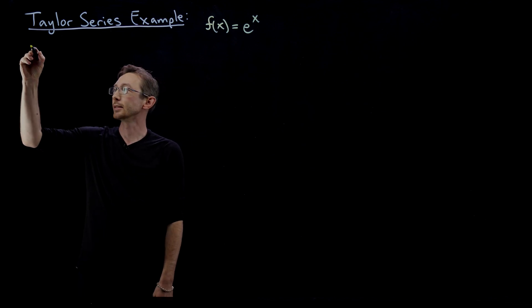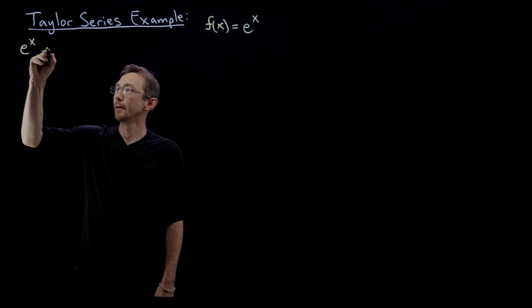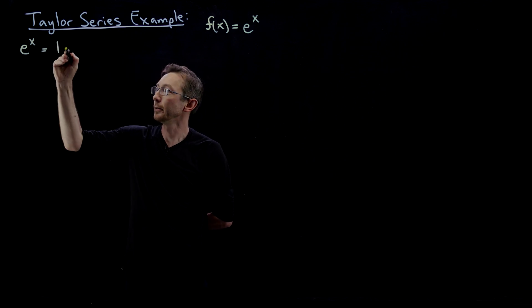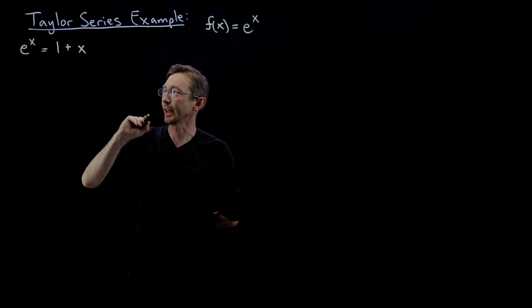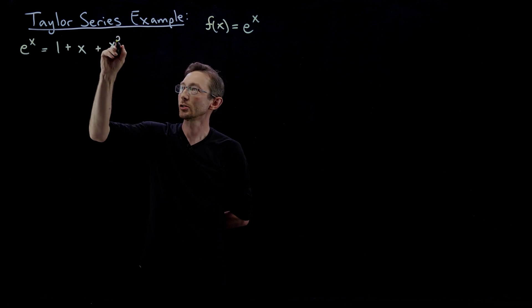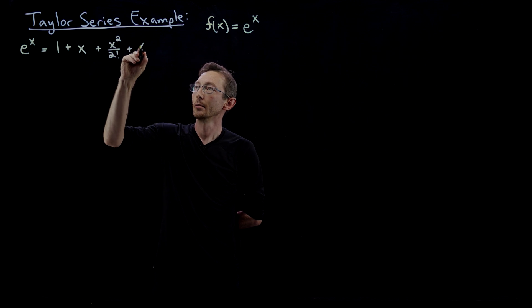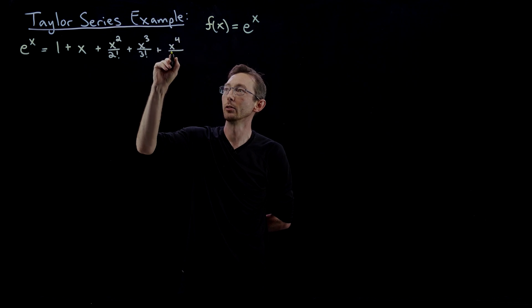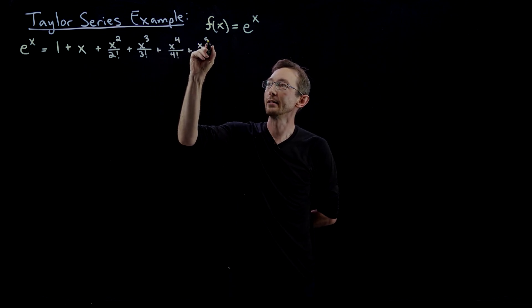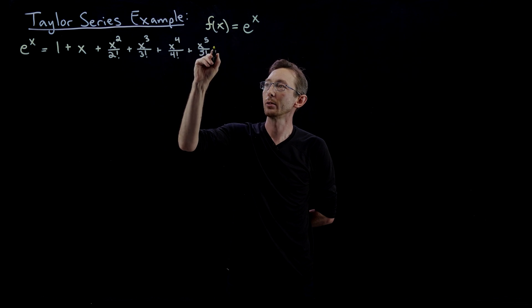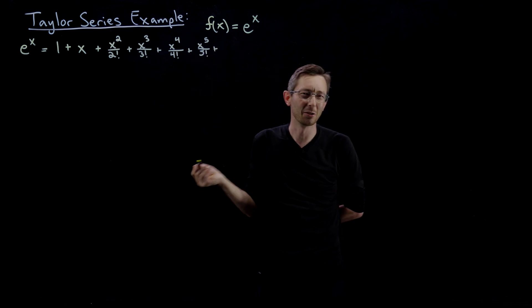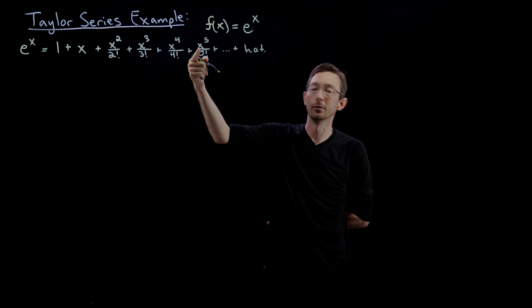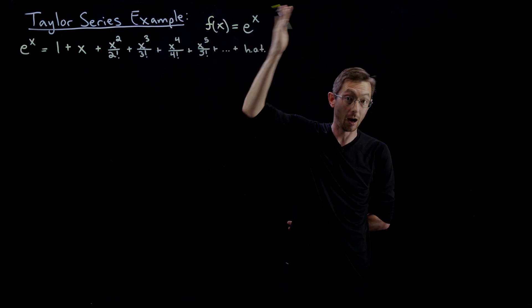E^x is, I should remember this off the top of my head, 1 + x + x²/(2!) + x³/(3!) + x⁴/(4!) + x⁵/(5!)... I probably don't need to go that high. I'll just say plus dot-dot-dot, plus higher order terms in x to the sixth, seventh, eighth, higher order terms.